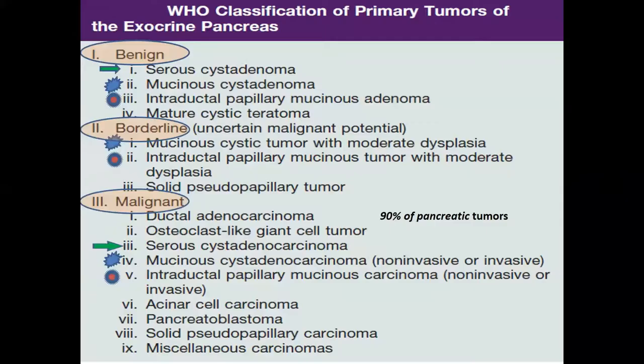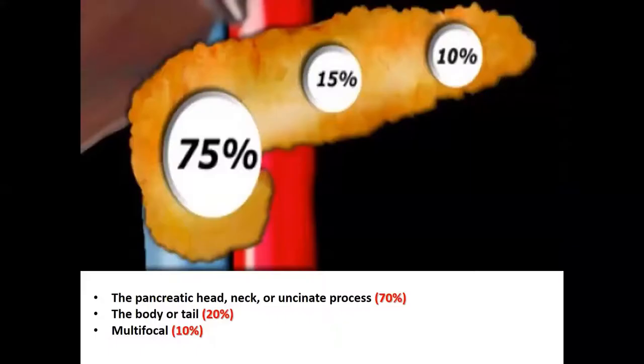In the pancreas, we have either benign, borderline, or malignant tumors. Duct adenocarcinoma constitutes more than 90% of all pancreatic tumors. It is mainly in the head, and less in the body and less in the tail, and it can be multifocal.